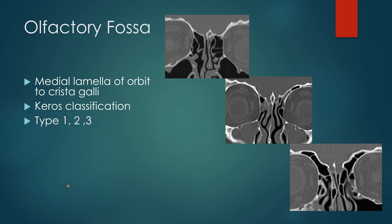The olfactory fossa is measured from the medial lamella of the orbit — where the roof meets the medial wall — to the crista galli, measuring the depth of that olfactory fossa. There is the Keros classification: Keros type 1 is less than 4 millimeters deep, Keros type 2 is between 4 and 7 millimeters deep, and Keros type 3 is greater than 7 millimeters deep. You measure both sides of the olfactory fossa.